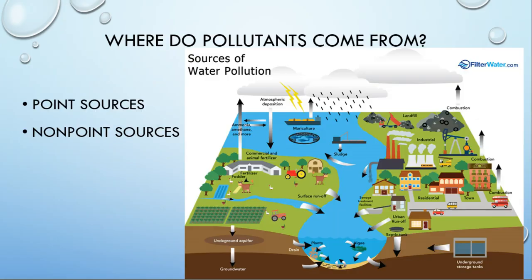When we start talking about where pollutants come from, we're going to be focusing on that air, water, and soil idea. There are two types of pollutants: there are point sources, and there are non-point sources.